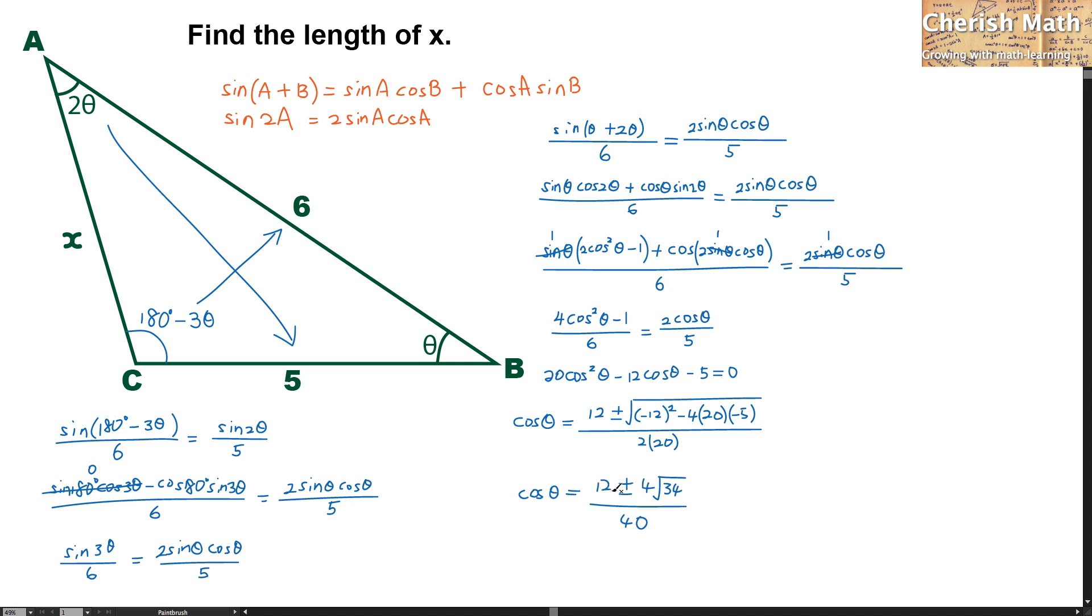And this number 12 plus 4 square root of 34 will definitely produce a value in positive. But however, 12 minus 4 square root of 34 will get a negative value. So in this case, we simply must drop the negative, and this is the value that we are taking into consideration now.